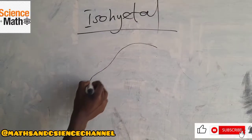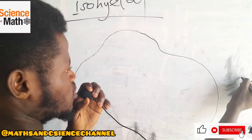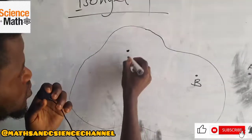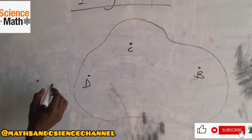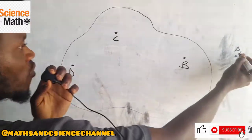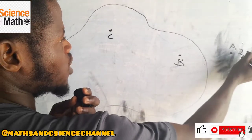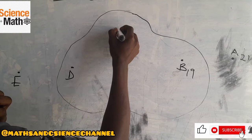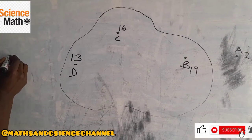We have a Kachi diagram here, and we have some stations. Let's say station A is a point outside, station B here, station C, station D, and station E. For 8 years, let's say the amount of precipitation at A is 21, at B is 19, at C is around 16, at D is around 30, and at E is around 10.